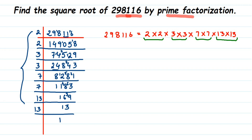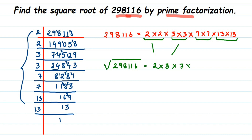Since all prime factors are in pairs, this is a perfect square and we can find its square root by this method. From each pair, take one number and multiply them together. From the pair of 2s take one 2, from the pair of 3s take one 3, from the pair of 7s take one 7, and from the pair of 13s take one 13. Multiplying: 2 × 3 = 6, 6 × 7 = 42, 42 × 13 = 546.